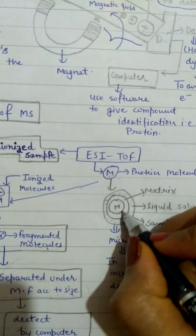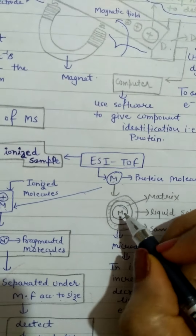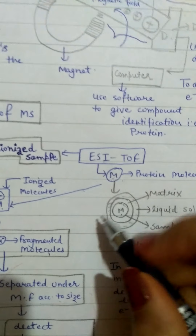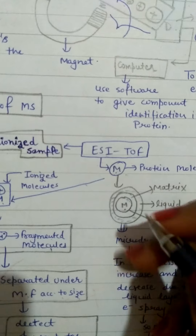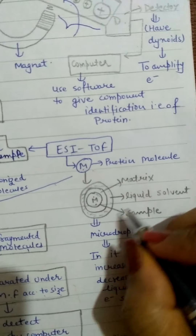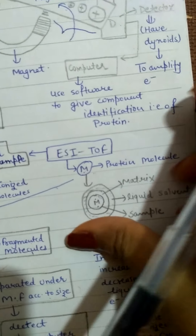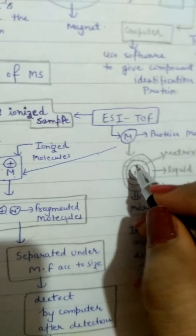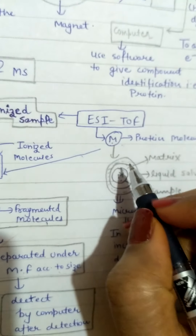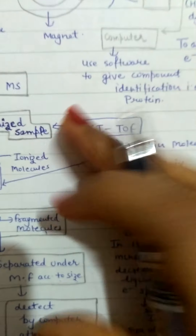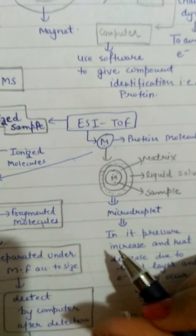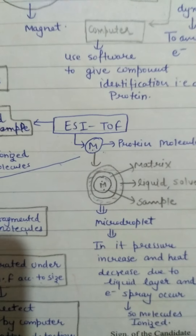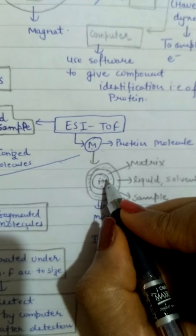Our sample preparation is done the same way as before. The sample is placed in a liquid solvent. In the center we have the protein sample which we will study. After adding our matrix, we have a liquid sample forming a micro-droplet. Because of this, the liquid solvent starts to exert pressure on the matrix, and the protein sample begins to come out of the matrix.